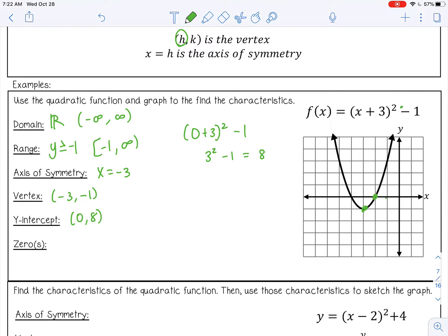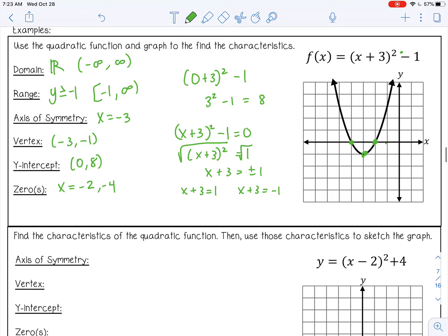And then my zeros, I can tell where they are right here, x equals negative 2 and negative 4. But just so we can always remember we can solve for them, let's go ahead and solve. I'm going to set it equal to 0 and solve by square roots. So I'm going to add that 1 first. Then I'm going to take the square root of both sides, and remember it's plus or minus 1. So I'm going to make two equations. So x equals negative 2 and x equals negative 4, which is what we got from our graph.